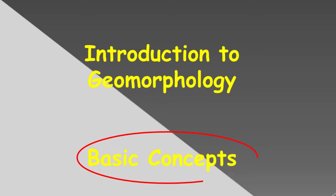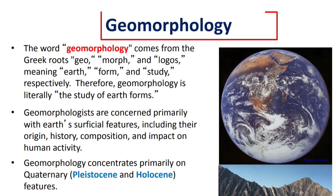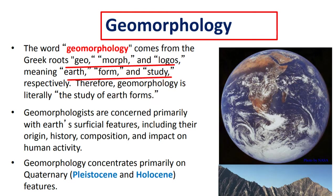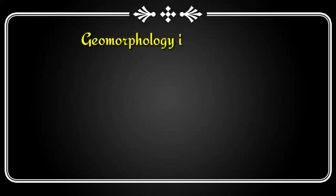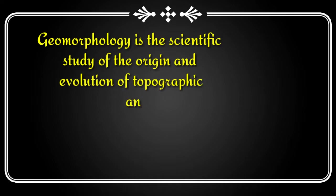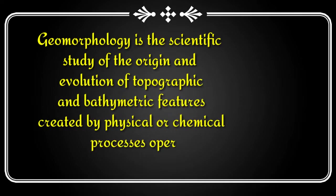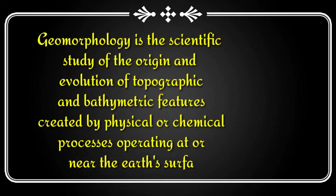Before coming to the topic, we have to know about geomorphology. The word geomorphology comes from the Greek roots: 'geo', 'morpho', and 'logos', meaning earth, forms, and study. Therefore, geomorphology is the scientific study of the origin and evolution of topographic and bathymetric features created by physical or chemical processes operating at or near the earth's surface.